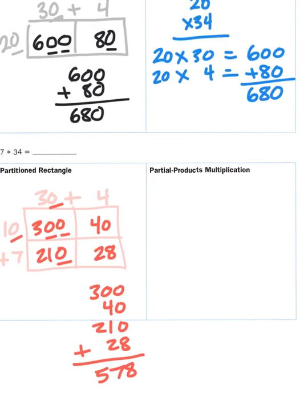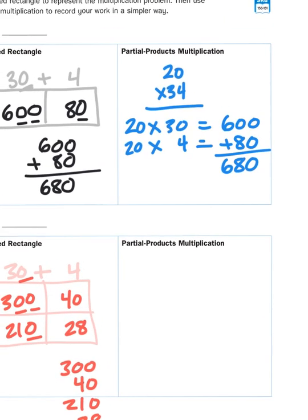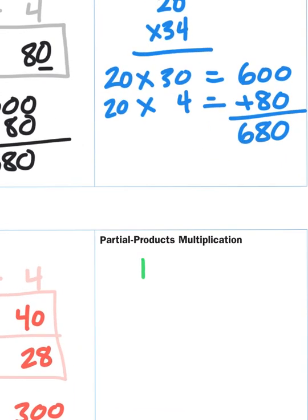Now if I approach that problem in the partial products way, I have got to do one more thing than I did in my partial products bottle for 20 times 34. So let's set up that algorithm: 17 times 34.